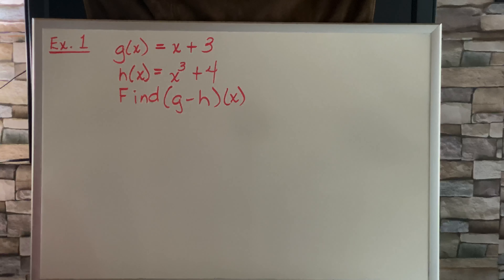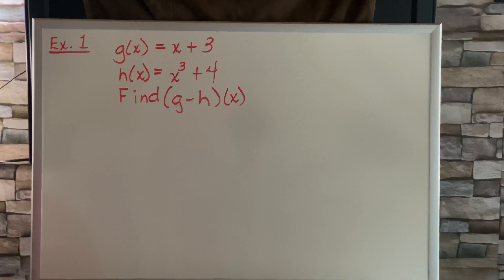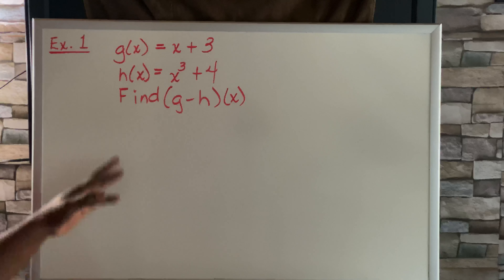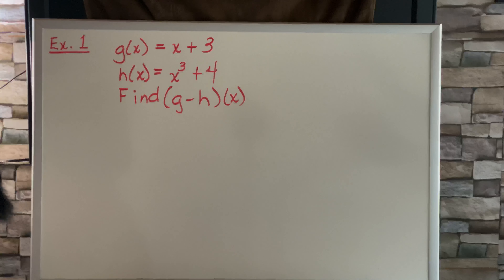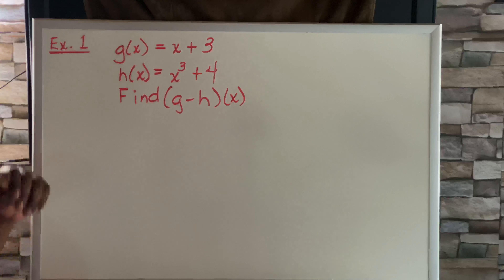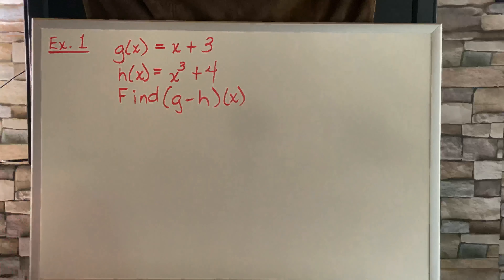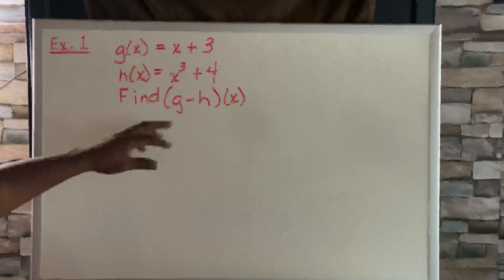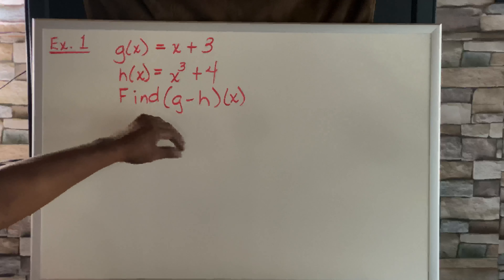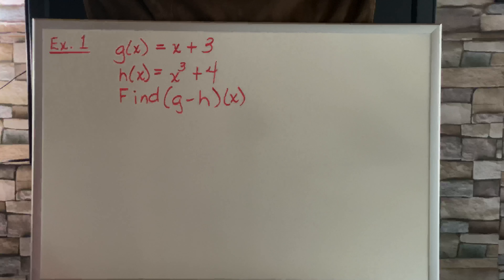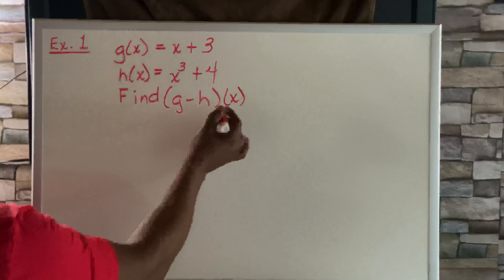Taking a look at Example 1, we have g of x equals x plus 3, h of x equals x cubed plus 4. It says find g minus h of x, so what we have to do is subtract. The function operation is subtraction.